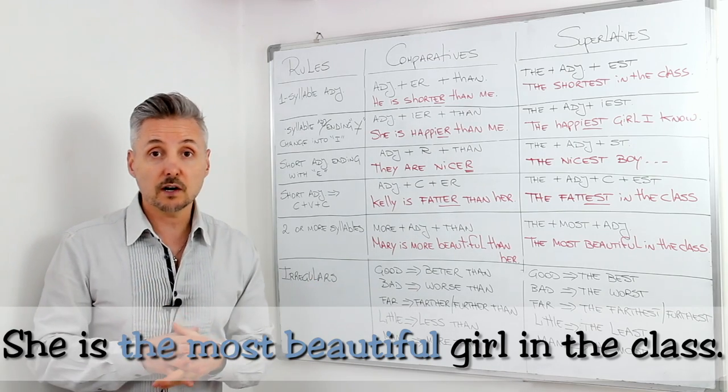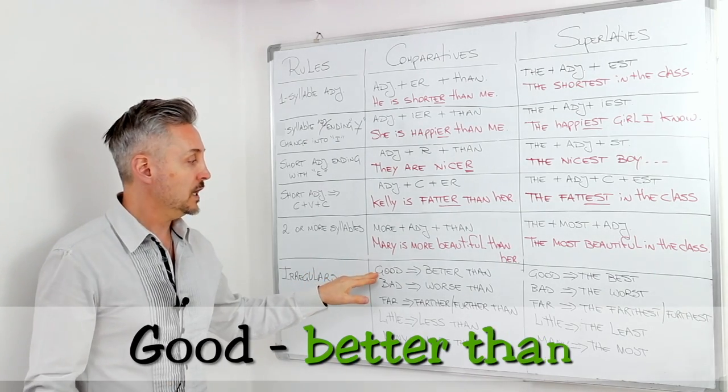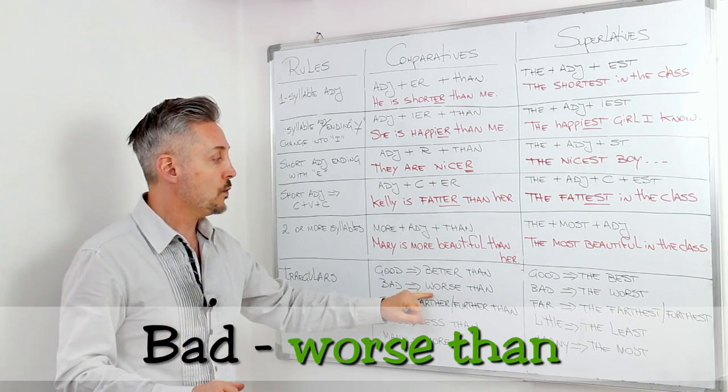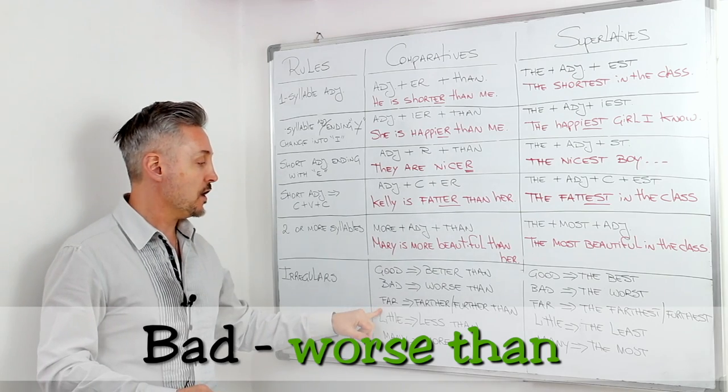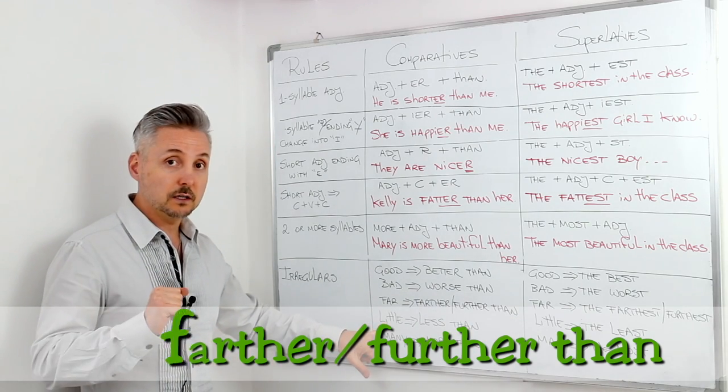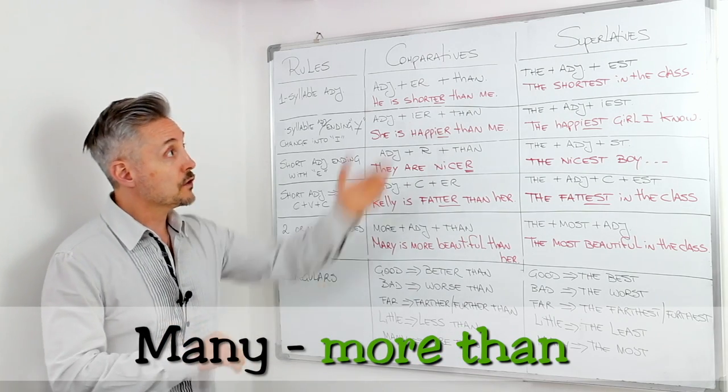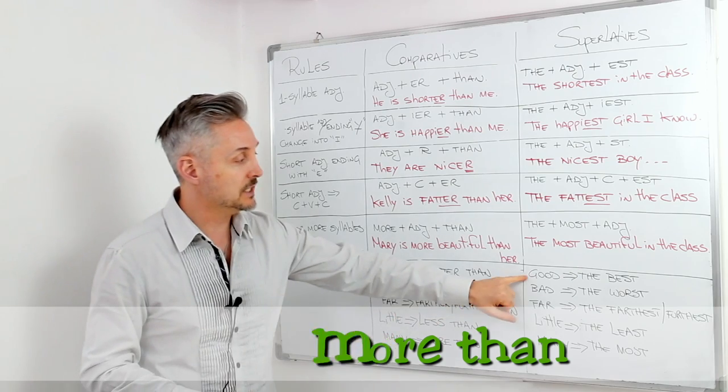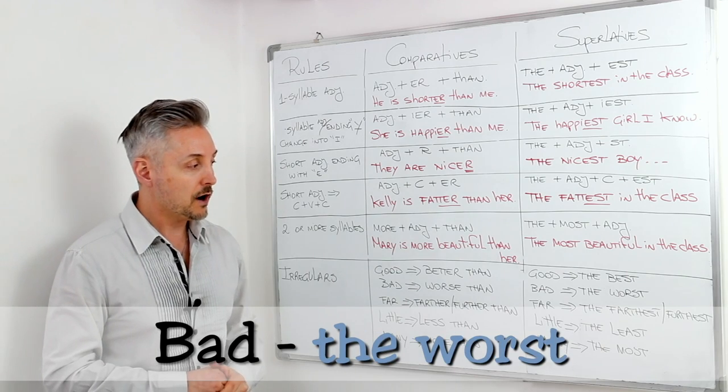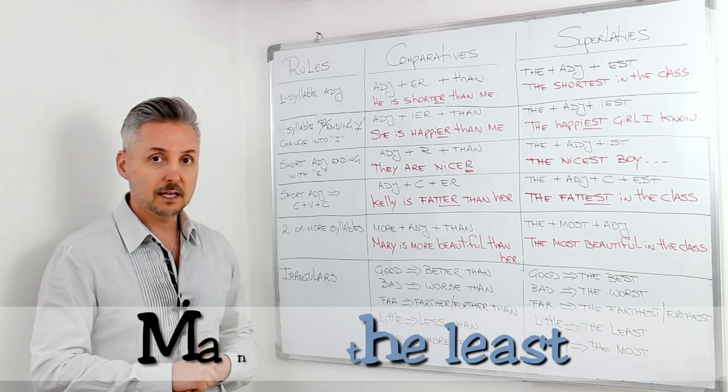Now, there are irregulars, like everywhere, right? And so, the irregulars are good goes to better than. Bad turns into worse than. Far, we have two. Farther or further than. Little turns into less than. Many, more than. For the superlatives, for the same adjectives. Good, the best. Bad, the worst. Far, the farthest or the furthest. Little, the least. Many, the most.